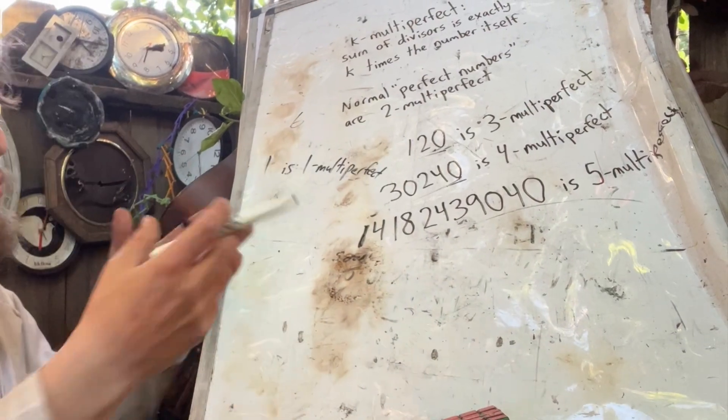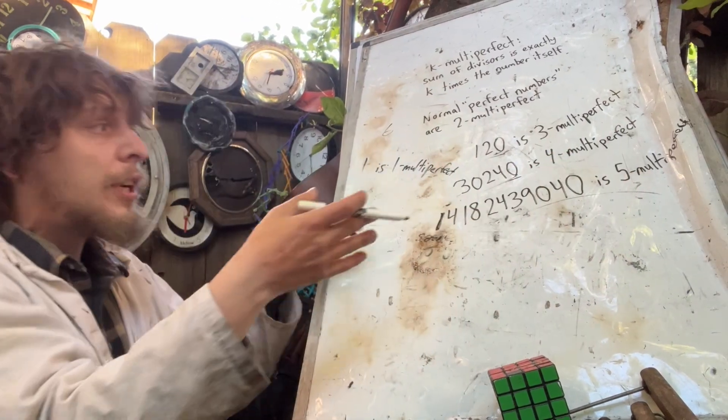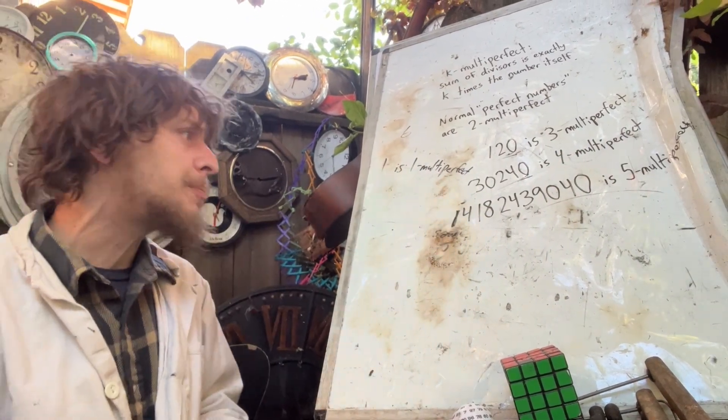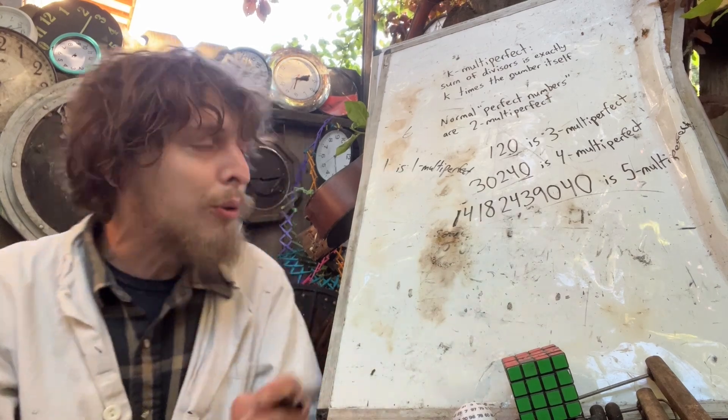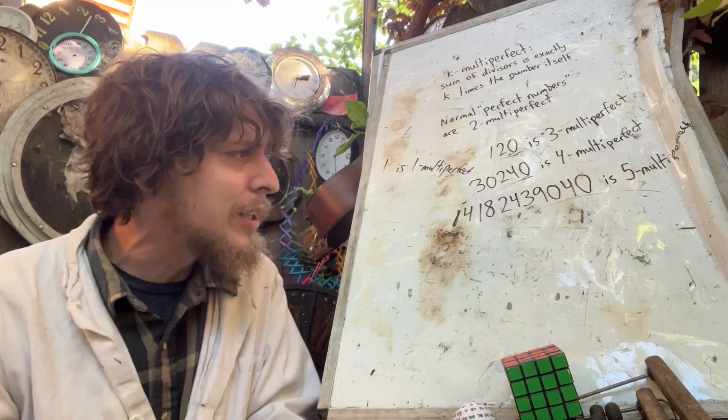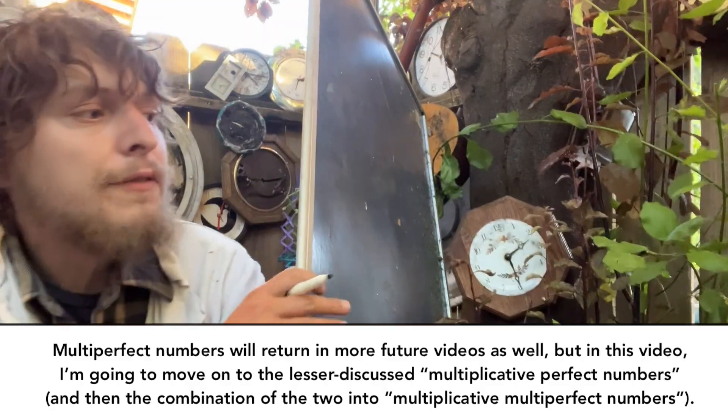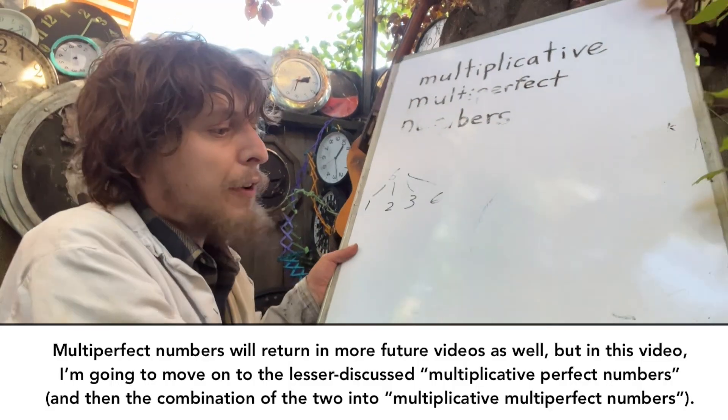This number, I wasn't familiar with in other contexts, but it is five-multi-perfect, in fact, the smallest five-multi-perfect number. There are more categories known. We know some six-multi-perfect numbers. There's a point where we don't know examples, and there are still many open questions.